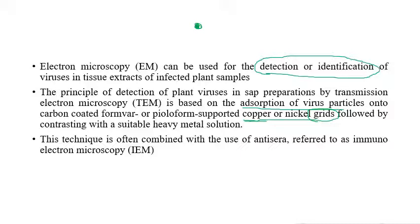After virus particles are absorbed onto the copper or nickel support grids, suitable staining is applied and the particular virus can be visualized. This technique is also combined with anti-sera to assess how much anti-sera is produced and its effectiveness. The technique used for anti-sera detection and identification is ISEM — immunosorbent electron microscopy — which is also used for detection of plant viruses.